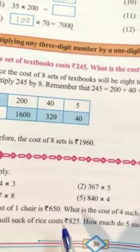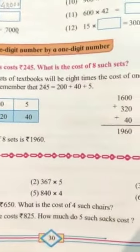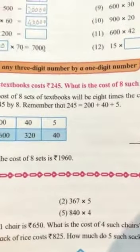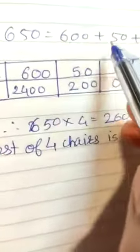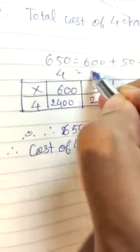What is the cost of 4 chairs? 4 chairs. Let's see. Now we know 650, 600 plus 50 plus 0. And 4 expanded form is 4.